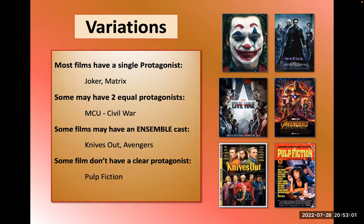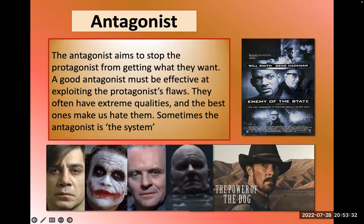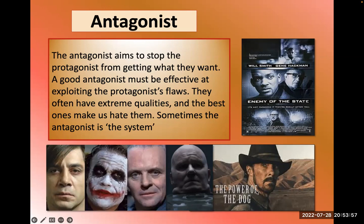Most films have a single protagonist, though occasionally you'll see two equal protagonists — like Captain America versus Iron Man in Civil War. Some films have an ensemble cast with many main characters: Avengers to some extent, Knives Out, Pulp Fiction — where the protagonist isn't as clear and you're following several different stories. The antagonist aims to stop the protagonist. In Enemy of the State, part of what Will Smith's character battles is the system — the government.